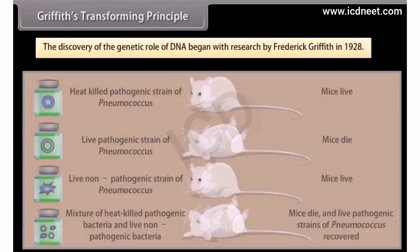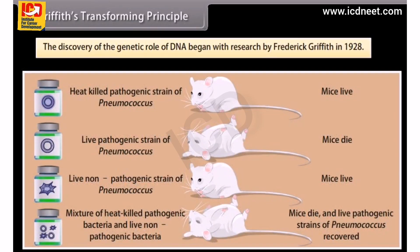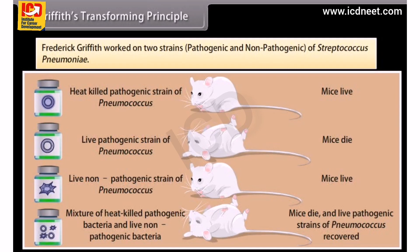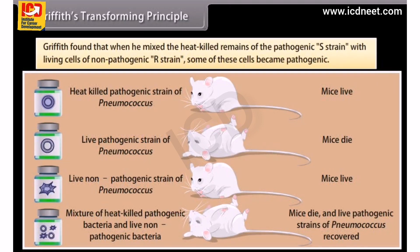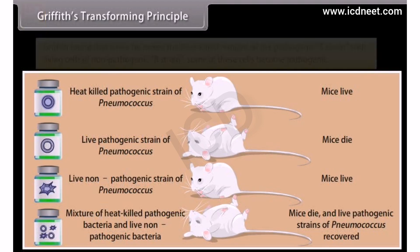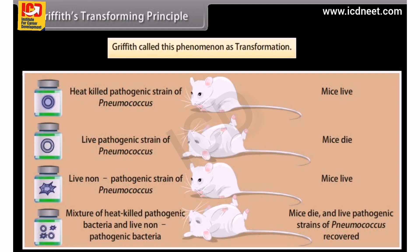Griffith's Transforming Principle. The discovery of the genetic role of DNA began with research by Frederick Griffith in 1928. Frederick Griffith worked on two strains — pathogenic and non-pathogenic — of Streptococcus pneumoniae. Griffith found that when he mixed the heat-killed remains of the pathogenic S strain with living cells of the non-pathogenic R strain, some of these cells became pathogenic. Griffith called this phenomenon transformation.